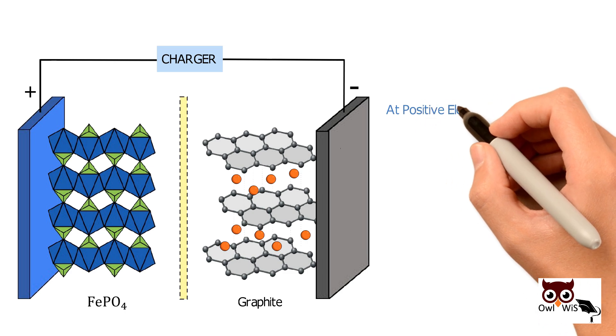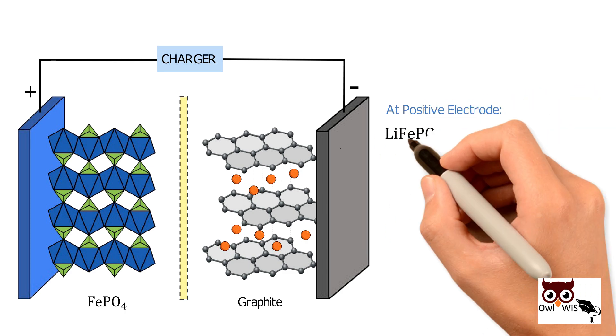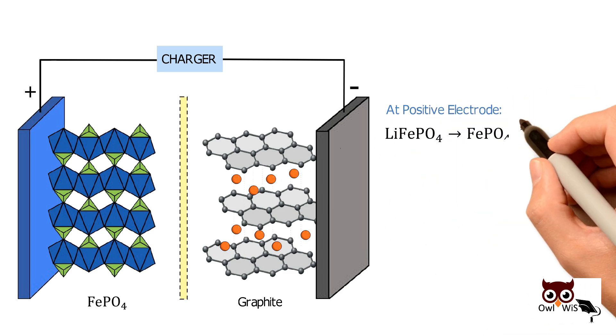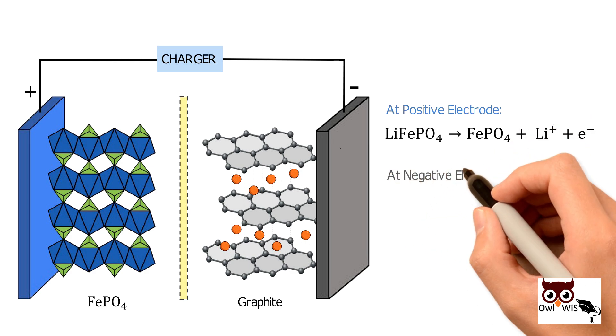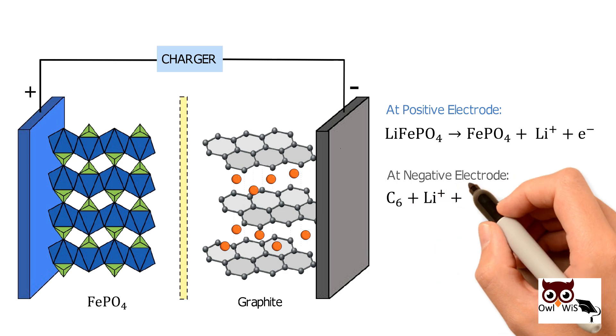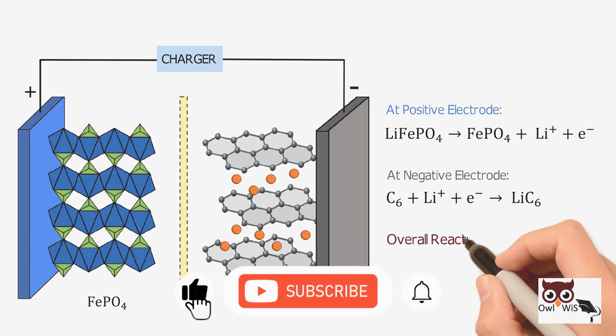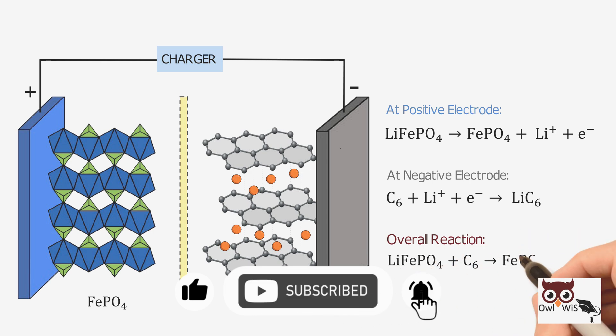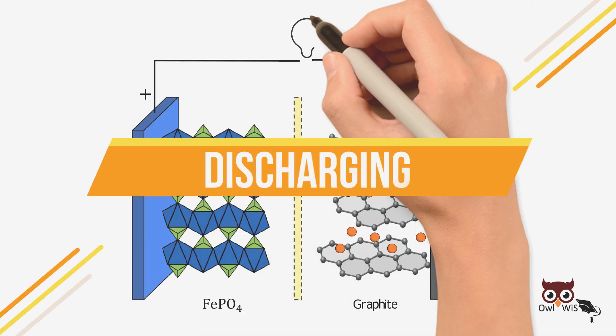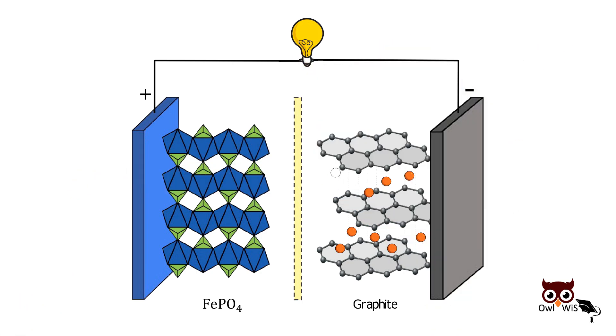The reactions are: at the positive electrode, lithium iron phosphate produces iron phosphate with lithium ions and electrons. At the negative electrode, graphene combines with lithium ions and electrons to form lithiated graphite. Overall, the reaction is lithium iron phosphate producing iron phosphate and lithiated graphite.